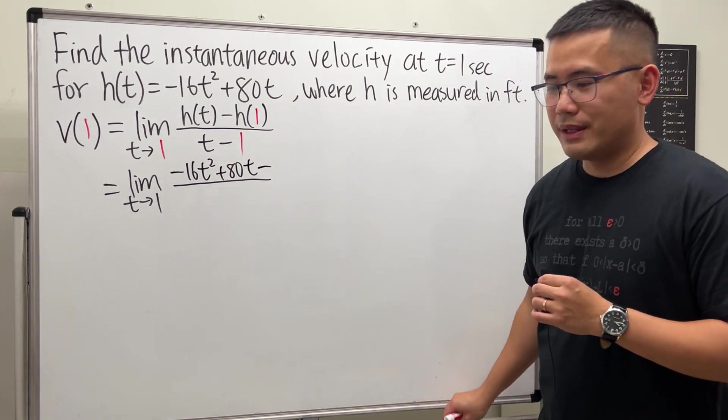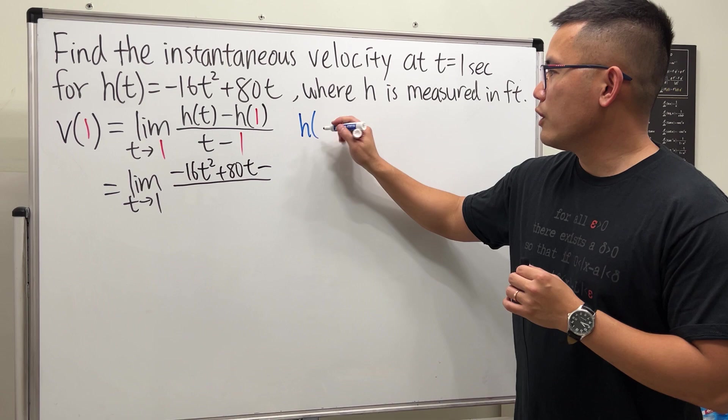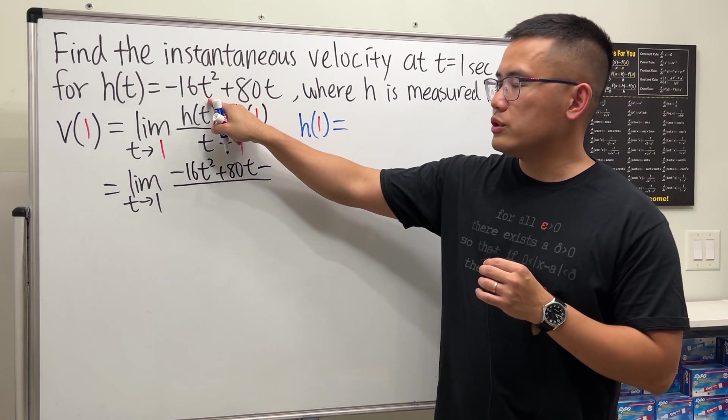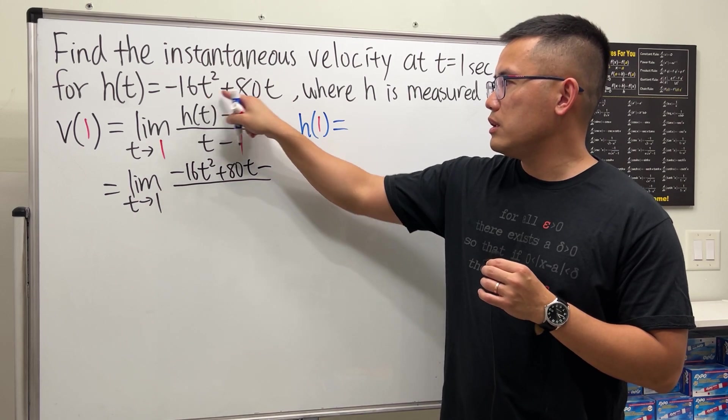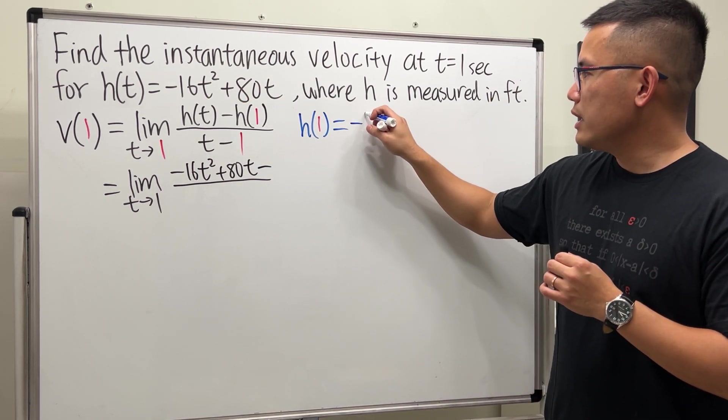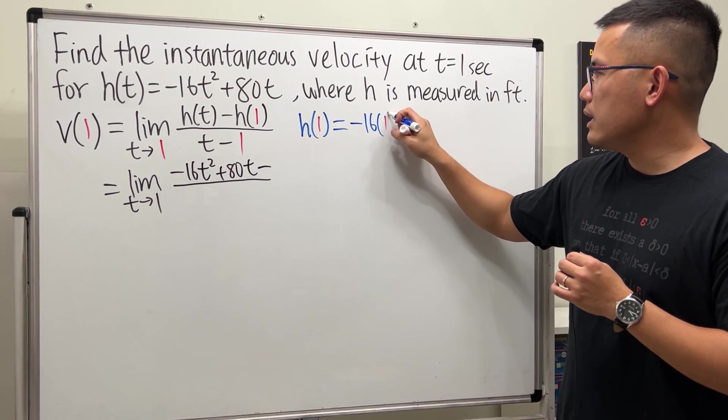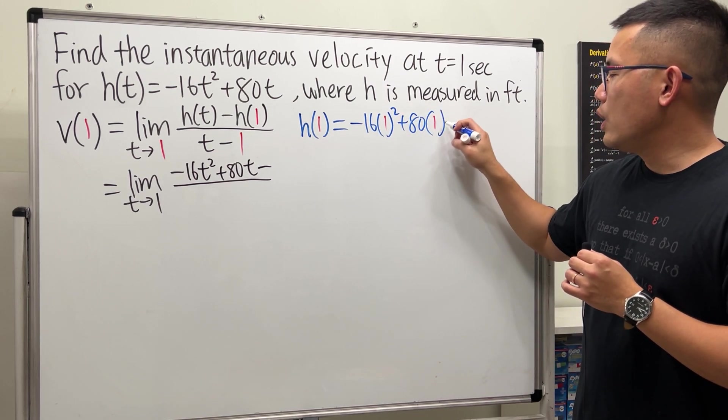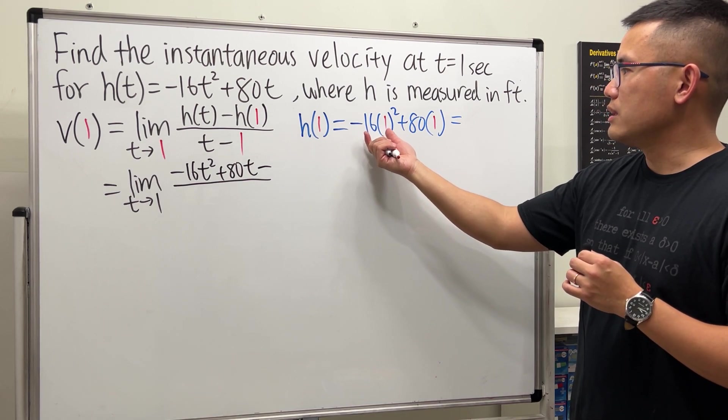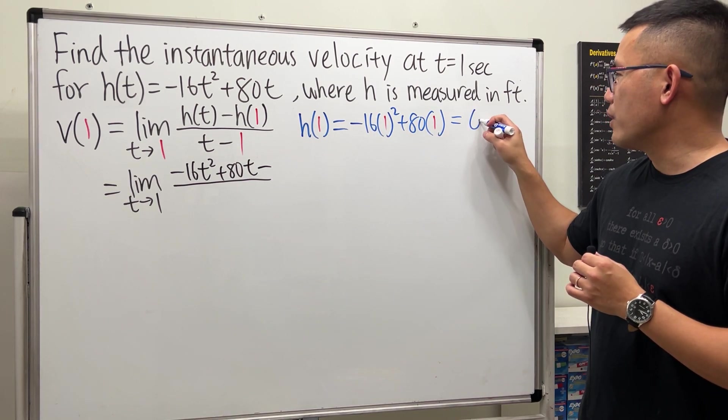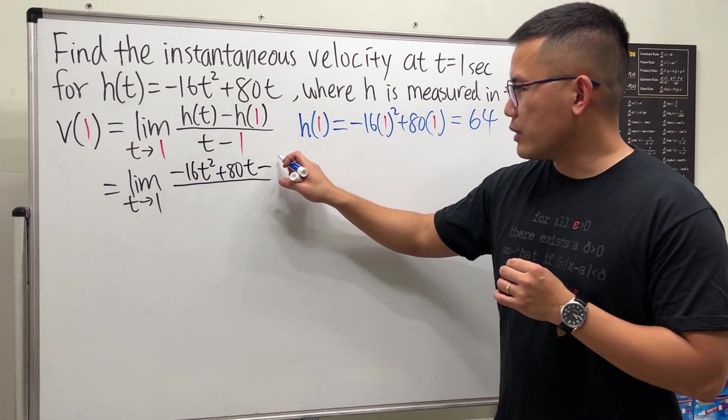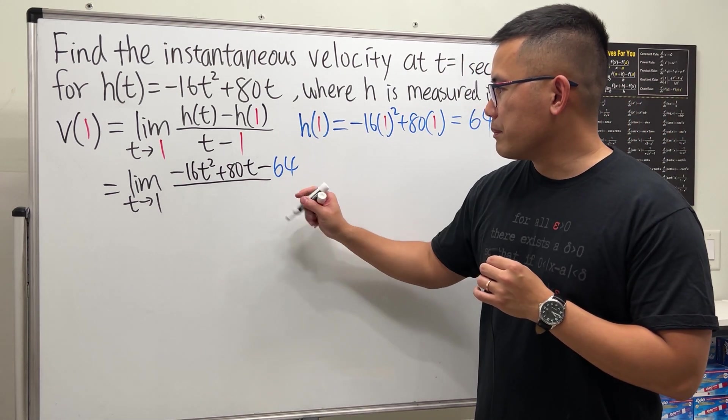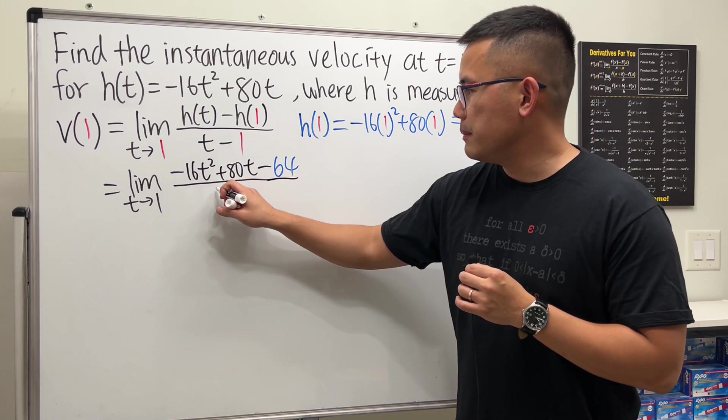What's h of 1? Well, let's do it on the side real quick. h of 1, this is just, we're plugging 1 into the original h function. The t here and also the t here. So we have negative 16 times 1 squared plus 80 times 1. Work that out. This is just negative 16 plus, that would get 64. So this right here, we will have minus 64. And then for the bottom, we get t minus 1.